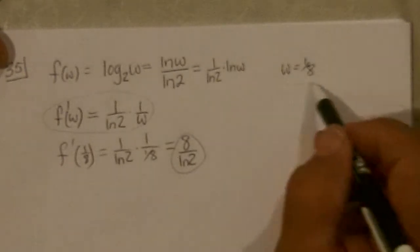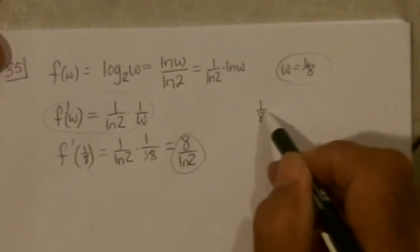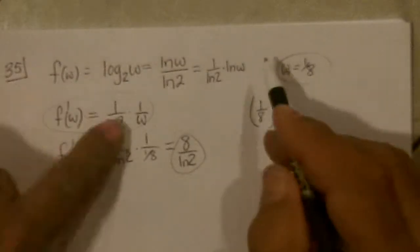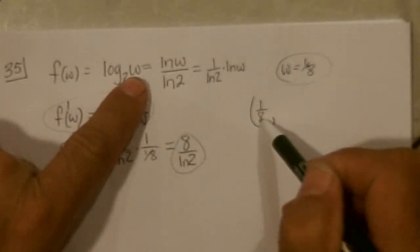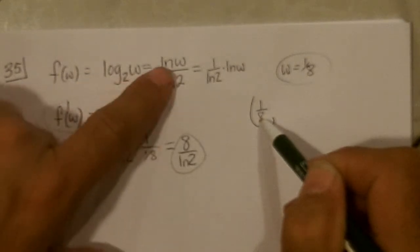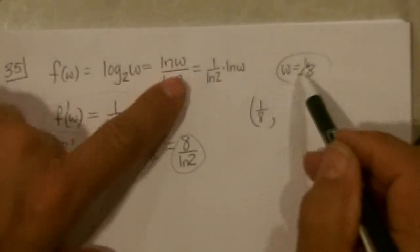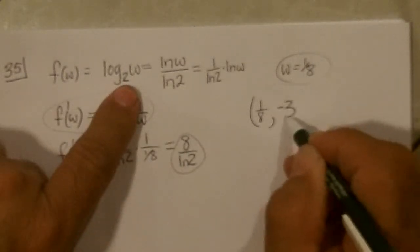Now let's find our point. W is 1 eighth. And F of W, 2 to what power is 1 eighth? The log base 2 of that, which we could do just natural log of 1 eighth over natural log of 2. And it comes out to be negative 3.